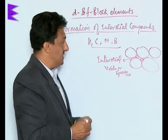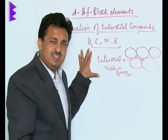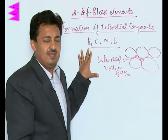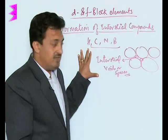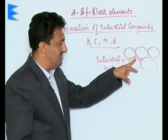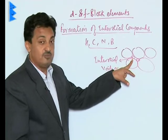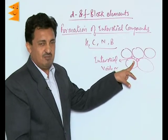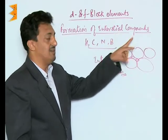When these smaller elements are mixed with the transition metals in the molten state and allowed to solidify, these small elements occupy the interstitial spaces and form non-stoichiometric compounds which are called interstitial compounds.